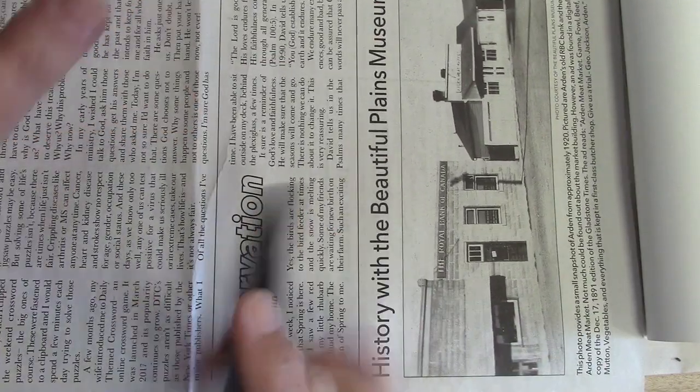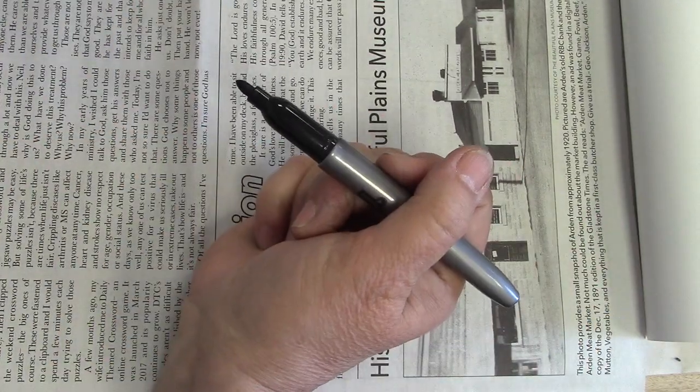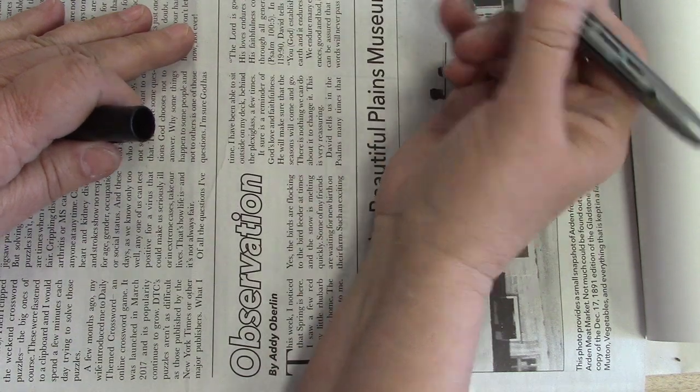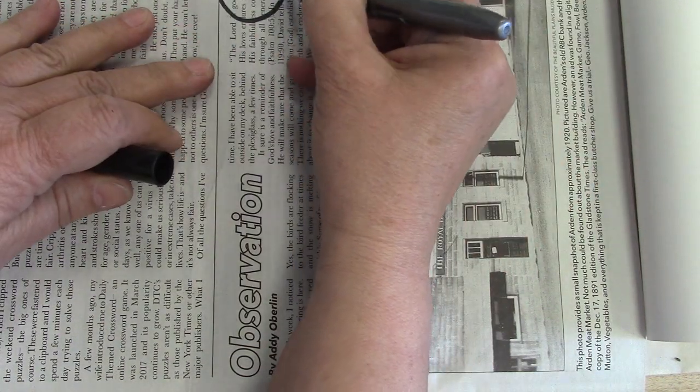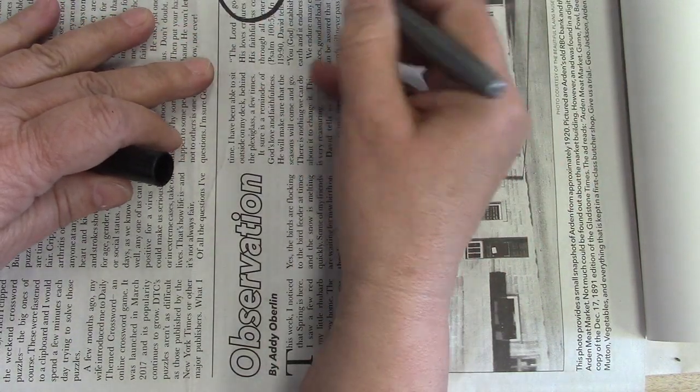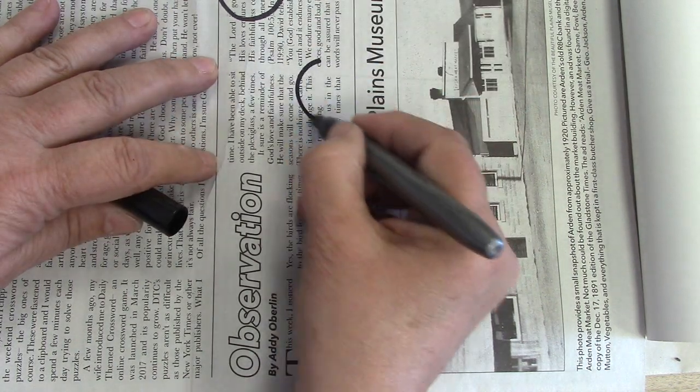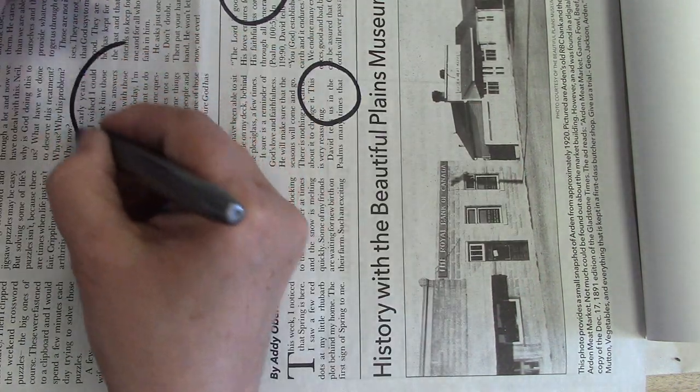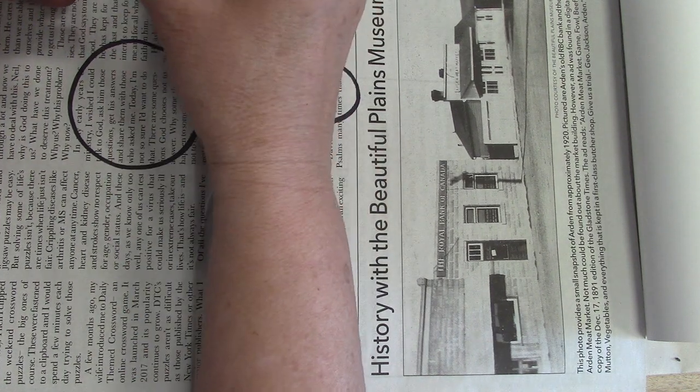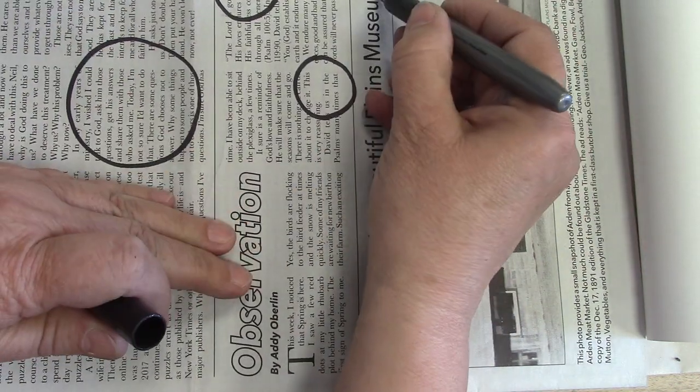Any newspaper will do, any marker. Today the shape we're going to be doing is circles. So we can start our warm-up by just making circles. That's why a newspaper is good because we've got so much space.